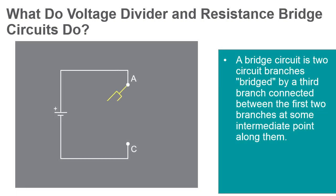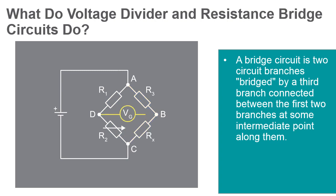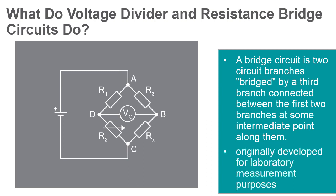A bridge circuit is an electrical circuit in which two circuit branches are bridged by a third branch connected between the first two branches at some intermediate point along them. A Wheatstone bridge is a device used to measure the electrical resistance by comparison method. The bridge was originally developed for laboratory measurement purposes, and one of the intermediate bridging points is often adjustable when so used.